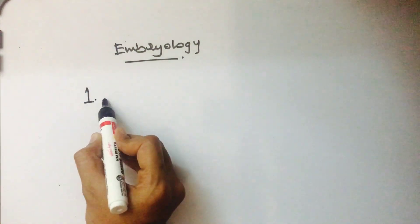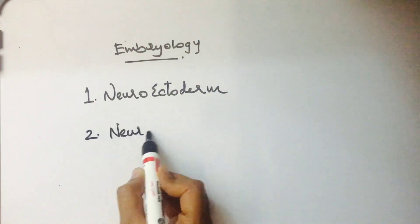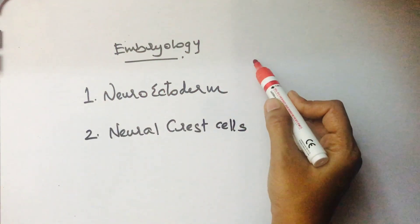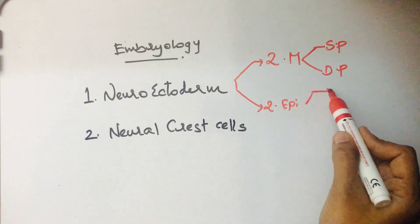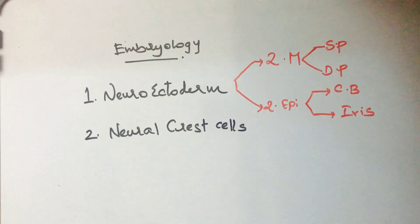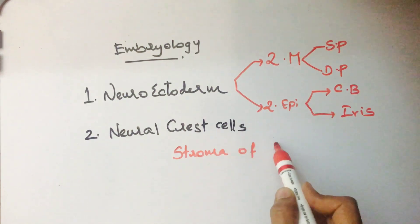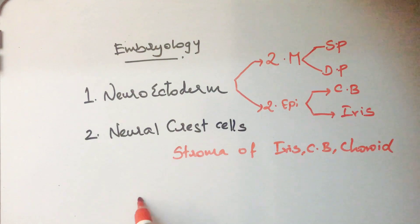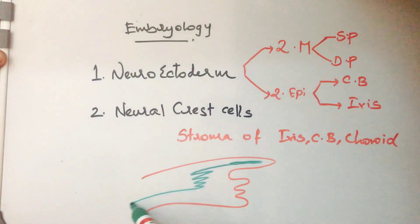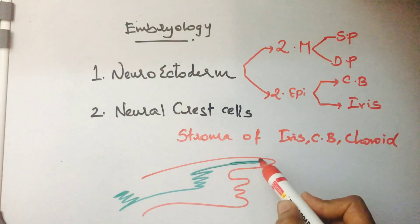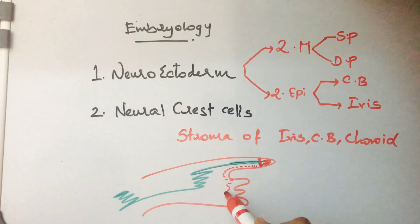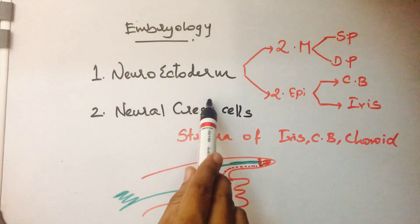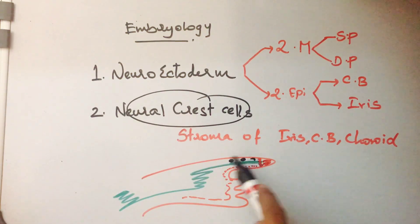Now the embryology part, covering only MCQ-relevant points. Remember two terms: neuroectoderm and neural crest cells. Structures developed from the neuroectodermal layer include: the two muscles of the iris (sphincter pupillae and dilator pupillae), the two epithelial linings of the ciliary body and iris, and the stroma of the ciliary body and stroma of the choroid. Melanocytes also develop from neural crest cells.